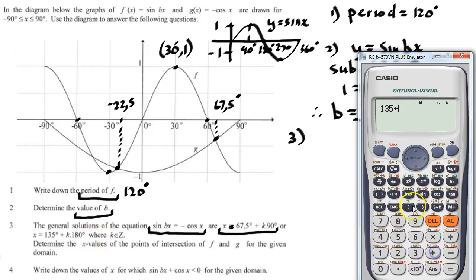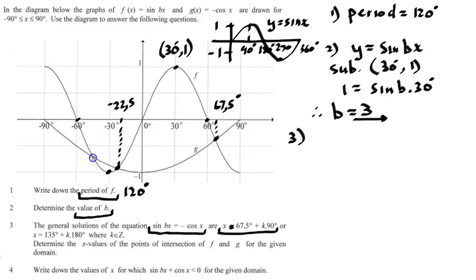135 plus k open and close brackets times 180 degrees. Now let's go and put in a value. If I put 1 there, it's going to be out of the domain. So let's just try and put -1 and see what happens. -45. And there we go. There's -45 here. -45. So now I've got all three intersection points.